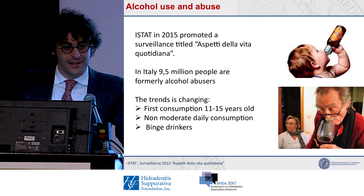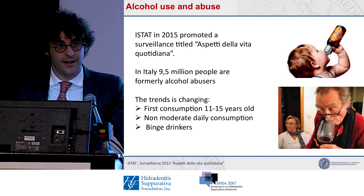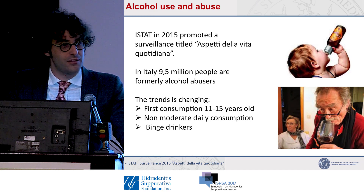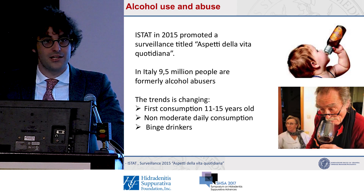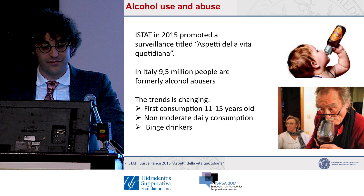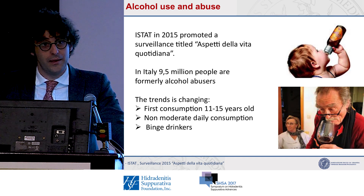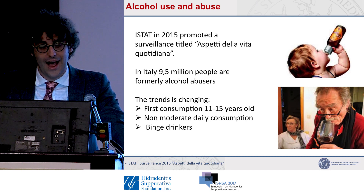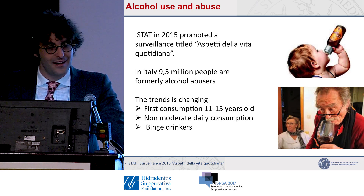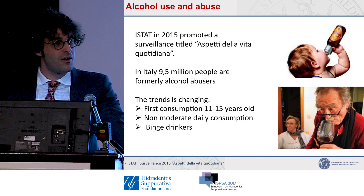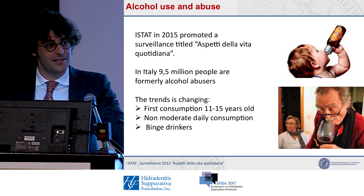In Italy, ISTAT is a health organization that each year promotes surveillance about aspects of life across Italy. In 2015 it promoted a surveillance titled 'Aspetti della vita quotidiana,' meaning daily aspects of life. Among roughly 45 million people and 19 million families, we found that 9.5 million people are formerly alcohol abusers. The trends are also changing: alcohol use is beginning earlier and earlier, daily consumption has increased, and there is also the phenomenon of binge drinking.